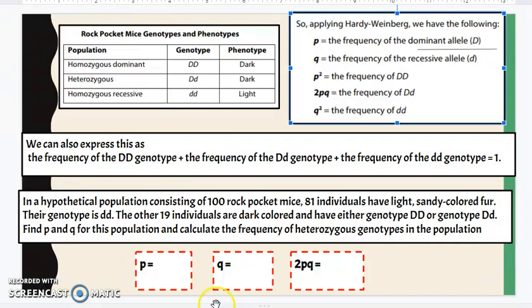Now when we look at this first question, it says in a hypothetical population consisting of 100 rock pocket mice, 81 individuals have light, sandy colored fur. Their genotype is little d, little d. The other 19 individuals are dark colored and have either genotype homozygous dominant or heterozygous. Find P and Q for this population and calculate the frequency of heterozygous genotypes in the population.